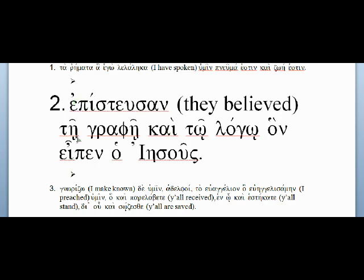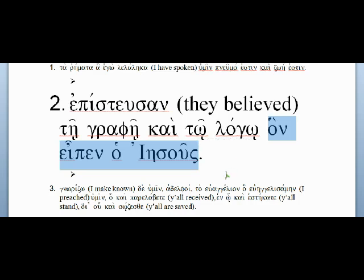So: they believed the scripture and the word. Now you have a relative clause. I didn't pull it apart since it was in the middle, but there's no need to. What you find is you yank the relative clause out and the sentence still makes perfect sense: 'they believed the scripture and the word' — that makes perfect sense. Knowing that, we can treat the relative clause as its own unit.